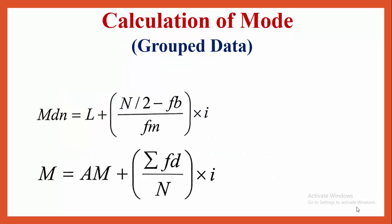Calculation of mode when grouped data is given (class interval and frequencies are given): Mode = 3 × Mdn − 2 × M, where Mdn = L + [(N/2 − FB) / FM] × i and M = AM + (Σfd / N) × i. By these two formulas we get mode, i.e., Mode = 3 × Mdn − 2 × M. This formula is used for calculating mode when grouped data is given.